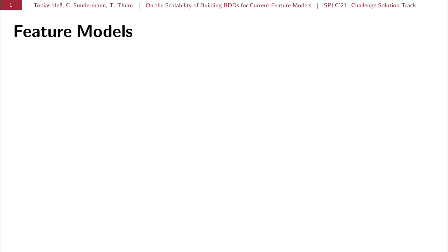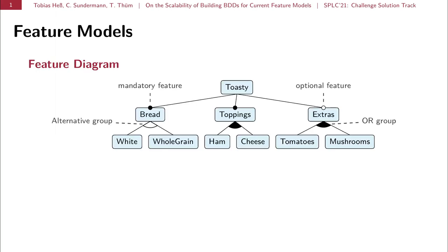Feature models consist of a feature diagram, which is displayed here, which encodes the hierarchy among the features as well as imposes some constraints on them. For example, exactly one member of an alternative group has to be selected when the parent feature is selected in order for the configuration to be valid.